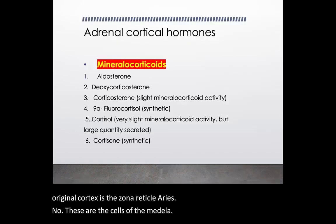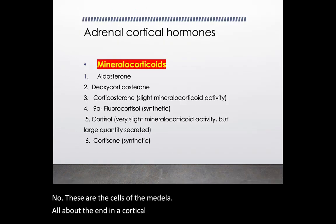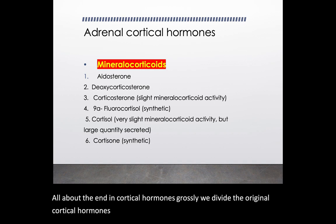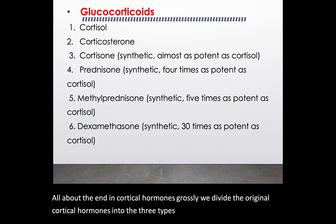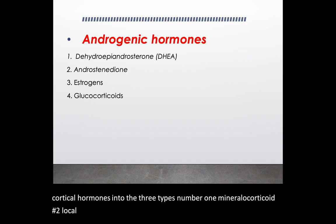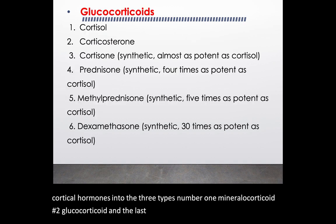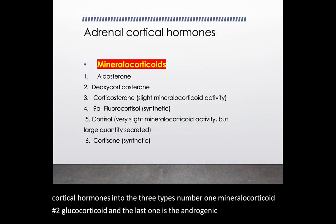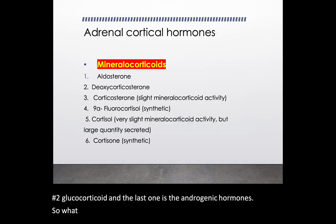We grossly divide the adrenocortical hormones into three types: number one, mineralocorticoids; number two, glucocorticoids; and the last one is the androgenic hormones. Mineralocorticoids are those hormones which are involved with the regulation of minerals and salts and eventually water.